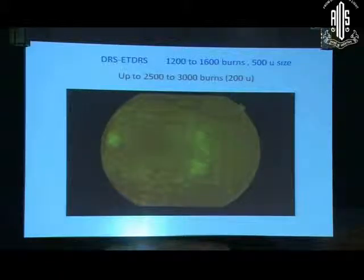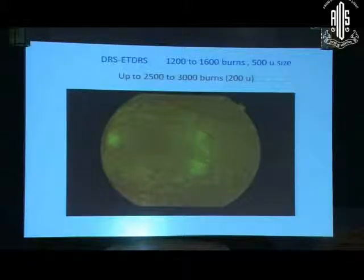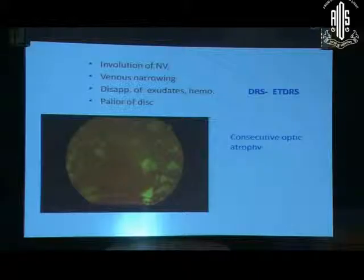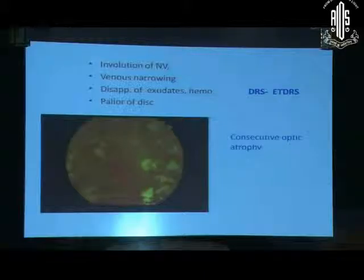Lalit said that up to 2500 burns will complete his PRP, which can be extended to 3000 burns as gathered from others. ETDRS said that the signs of regression of retinopathy are involution of new vessels, venous narrowing, disappearance of hard exudates and hemorrhages, and pallor of the disc — meaning in every case they produce a consecutive optic atrophy.